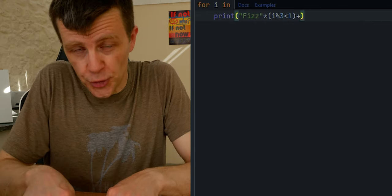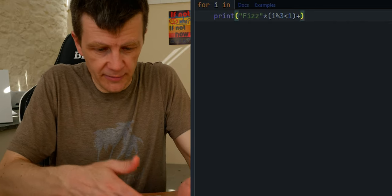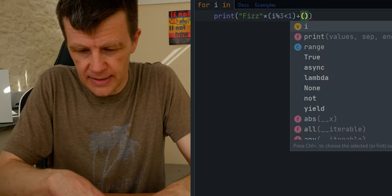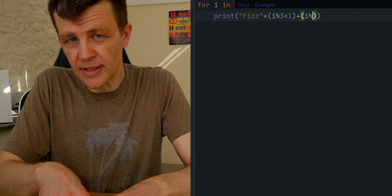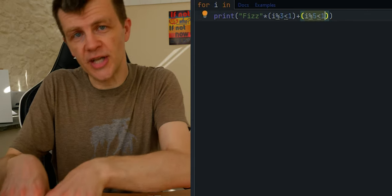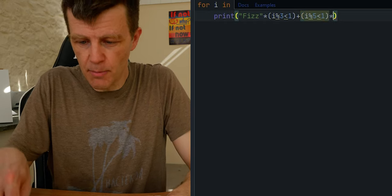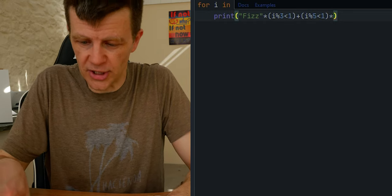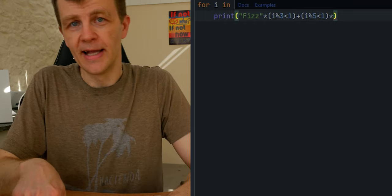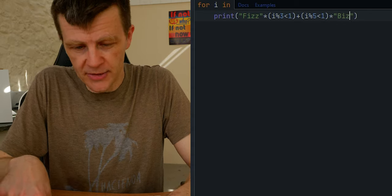We get fizz if i modulo three less than one returns true, because that will return one and we'll get fizz times one which gives us fizz. If it's not a multiple of three that will return zero and we won't get fizz. The same is true for buzz. If i modulo five less than one returns true we get buzz. If it's not true we don't get buzz.